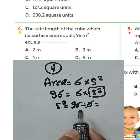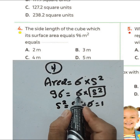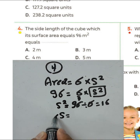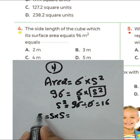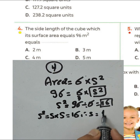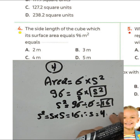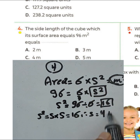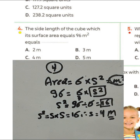We find s² by dividing: 96 divided by 6 equals 16. Since s² equals 16, the side length s equals 4, because 4 times 4 equals 16. The area was given in square meters, so the side length is 4 meters. Choose letter B for question number 4.